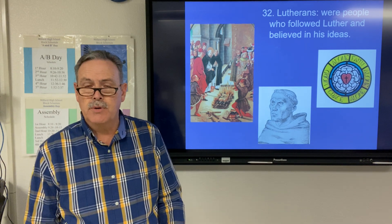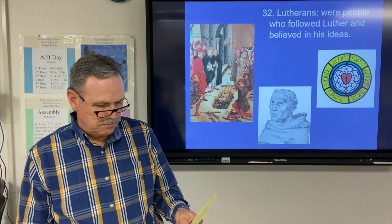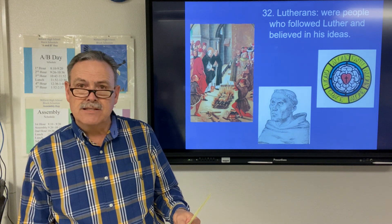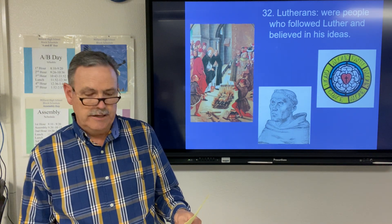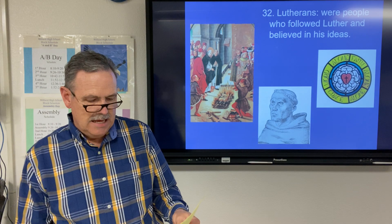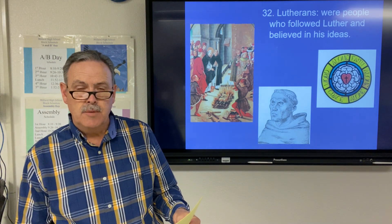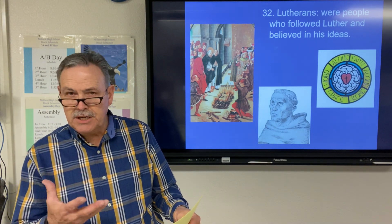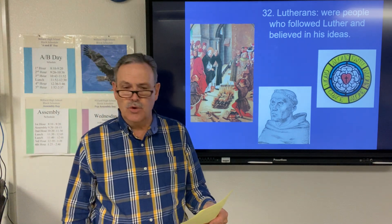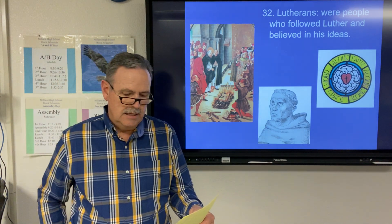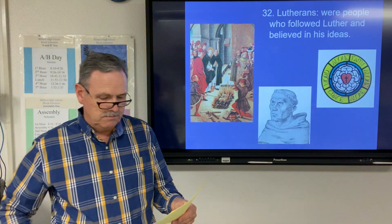So he fled to the castle of Frederick of Saxony, located in Germany, and changed his appearance — grew a beard, changed his name, and became known as Sir George. While there, he translated the New Testament into German.